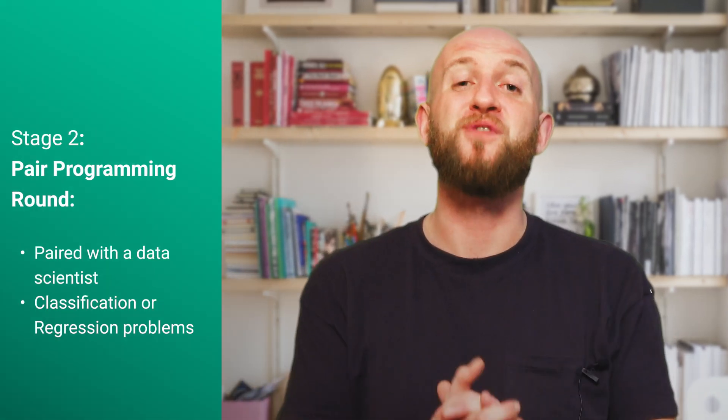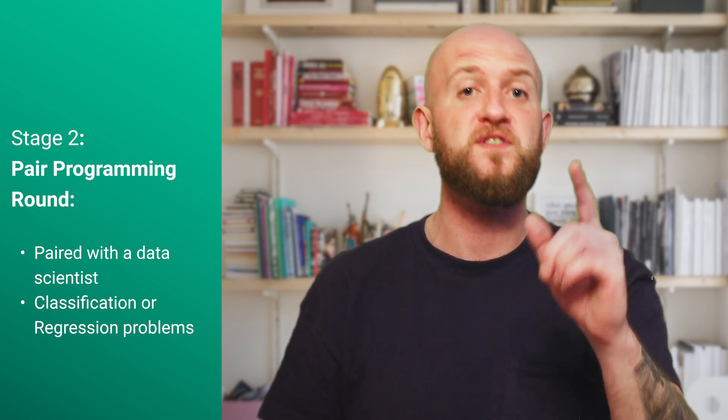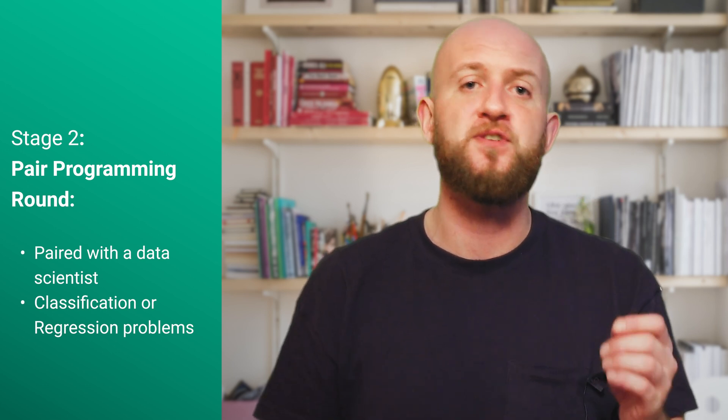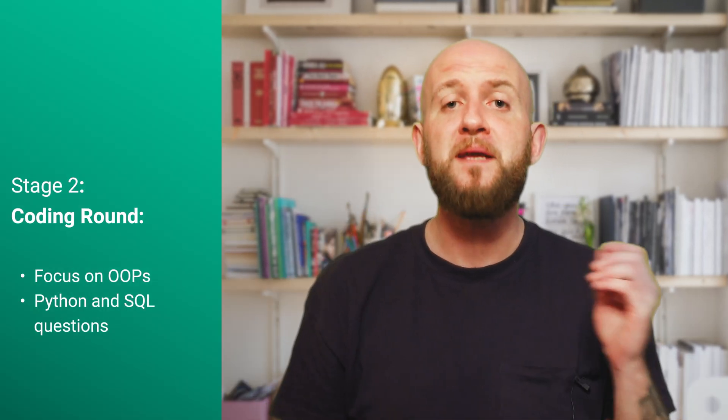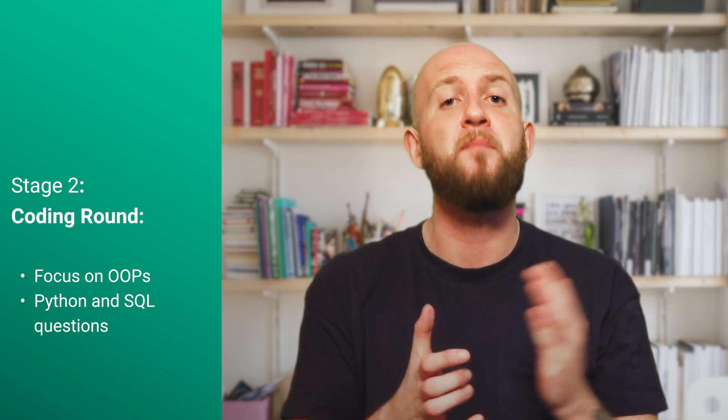Next up is round two, which can either be a pair programming round or a coding round. In the pair programming round, you'll be paired with a data scientist and given a dataset to solve a specific problem. It's often a classification or regression problem, but can also go beyond — a recent candidate reported being asked to work on MapReduce, for instance. If you get a coding problem, it will likely be focused on object-oriented programming in Python. You will be asked to fix bugs and add functionality to the code. There can also be some questions related to data science concepts, as well as a few themed around Python and SQL.